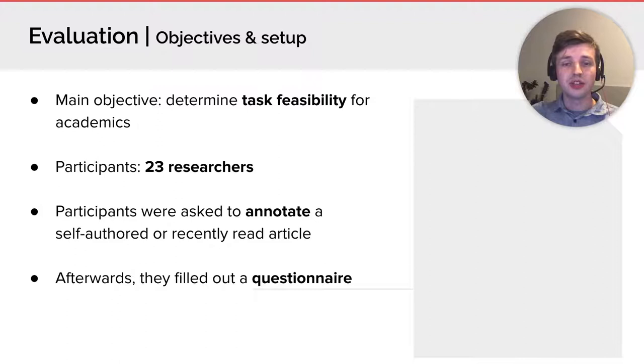Now I will discuss the evaluation of this research. The main goal of the evaluation was to determine the task feasibility and see whether researchers are willing to annotate their papers with this system, for example during paper submission. In total, 23 researchers were part of the evaluation. They were asked to annotate a paper they altered themselves or to annotate a recently read article. Afterwards, they were asked to fill out a questionnaire.